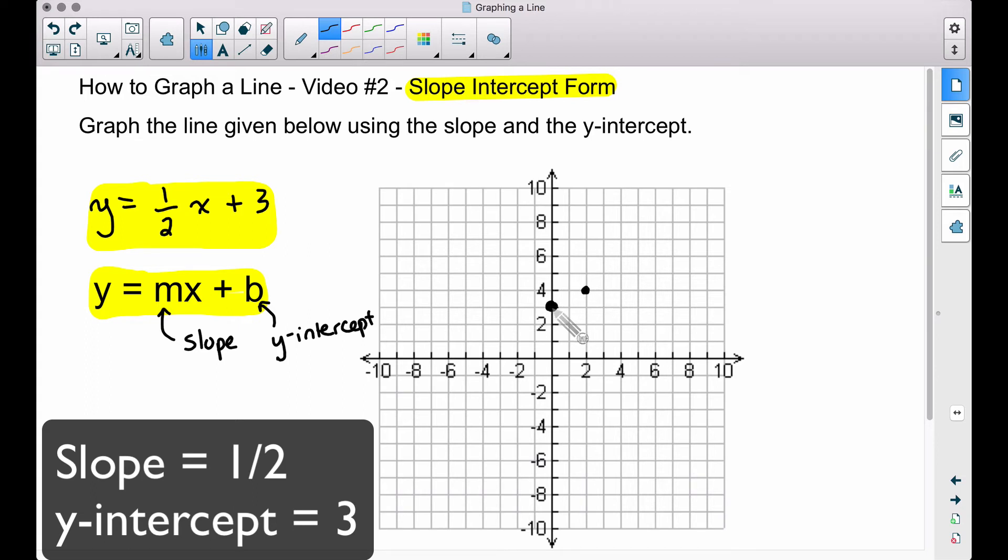Notice that I started from my y-intercept. We don't start from the origin, we start from that y-intercept, and we can continue this pattern: up one, right two, up one, right two. Take note of this fraction right here: negative one over negative two is technically still positive one-half. The reason I'm emphasizing this is because we can go down one and left two to get the same line.